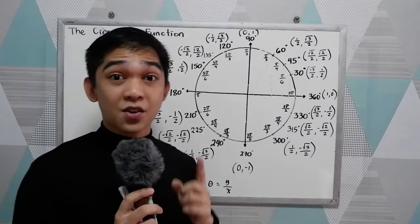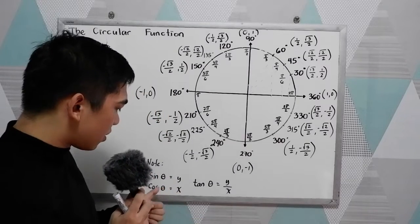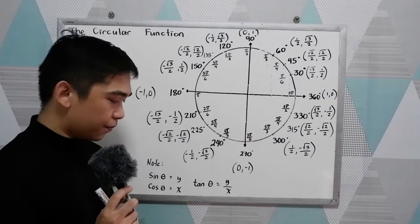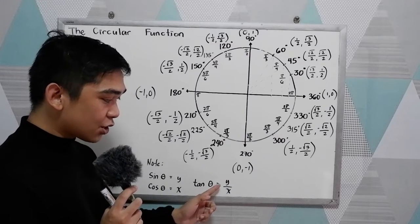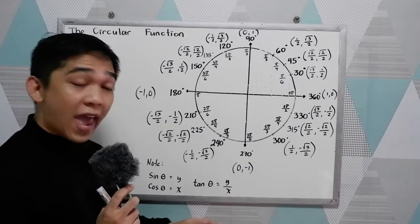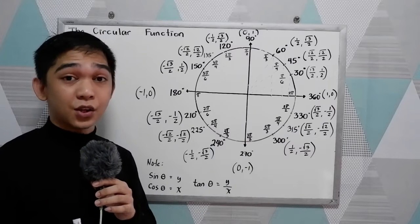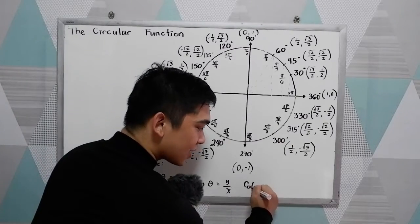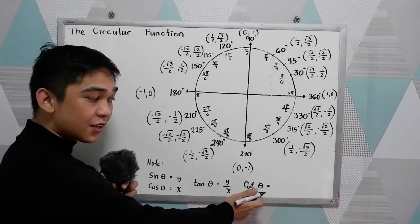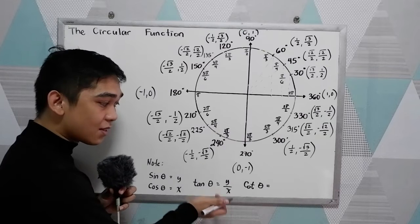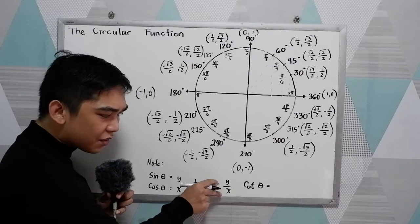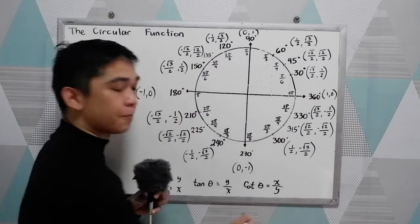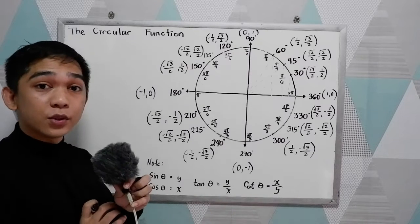Now let's proceed to our six trigonometric functions. Sine θ is equal to y. Cosine θ is equal to x. Tangent θ is y over x, wherein x must not be equal to zero — because if x is zero, that will give us undefined. The reciprocal of tangent is cotangent. Cotangent θ, since it is the reciprocal of tangent θ, we get the reciprocal of y/x, so that is x over y, wherein y must not be equal to zero.